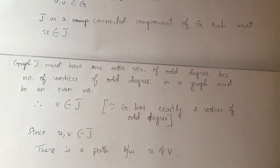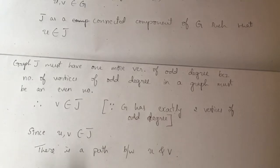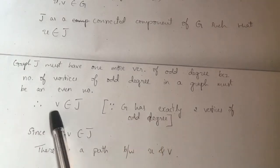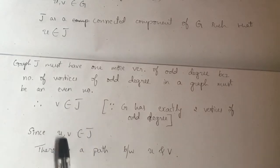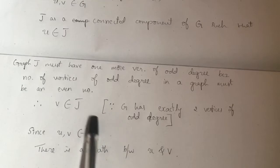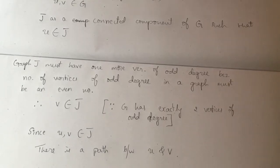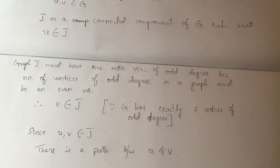I cannot consider any other vertex because it is already mentioned G has exactly two vertices of odd degree. Therefore V must belong to J. Since U and V are both in J and J is a connected component, there must be a path between U and V. So in a finite graph with exactly two vertices of odd degree, there is a path joining them.